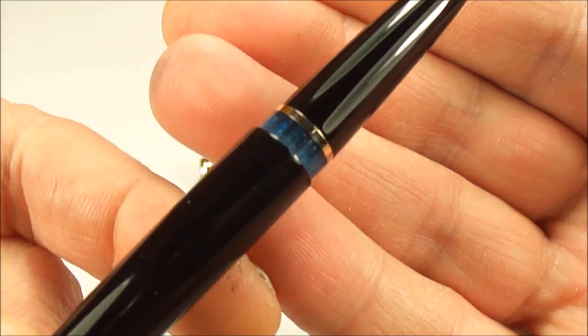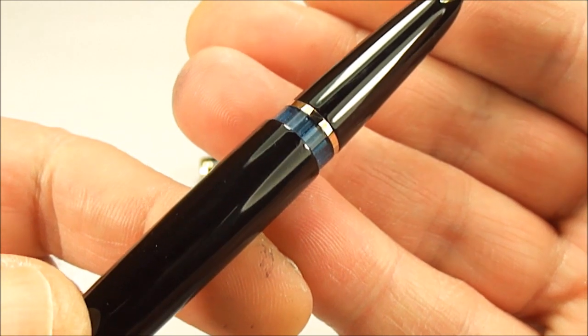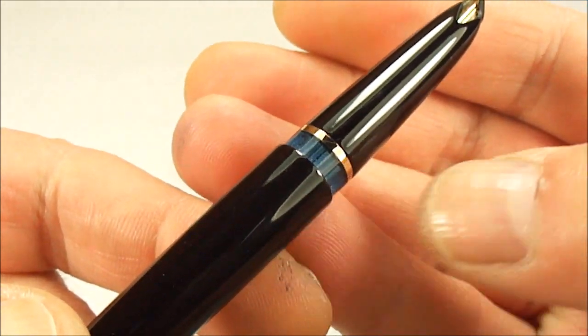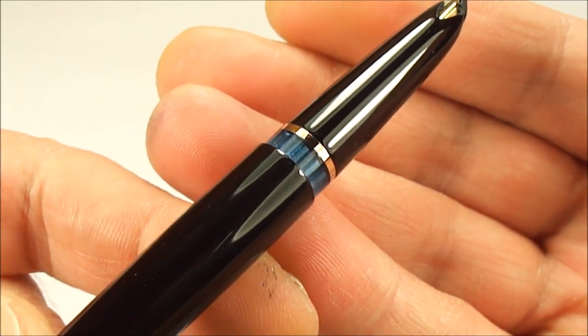To the top of the barrel there you'll notice it's got this sort of blue ink view window, and then just above it we've got a gold clutch band just above the ink view area.